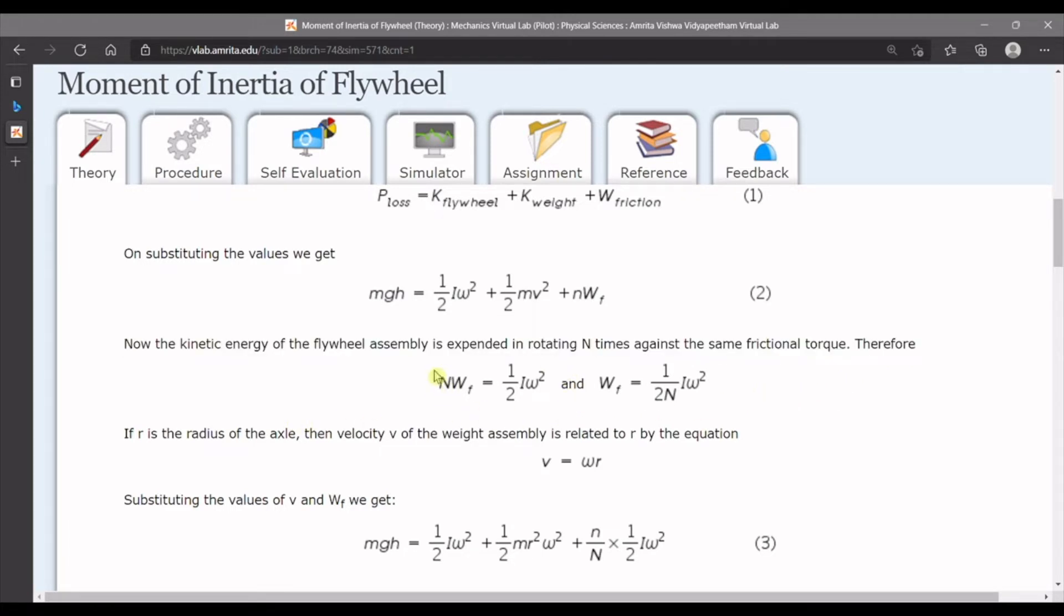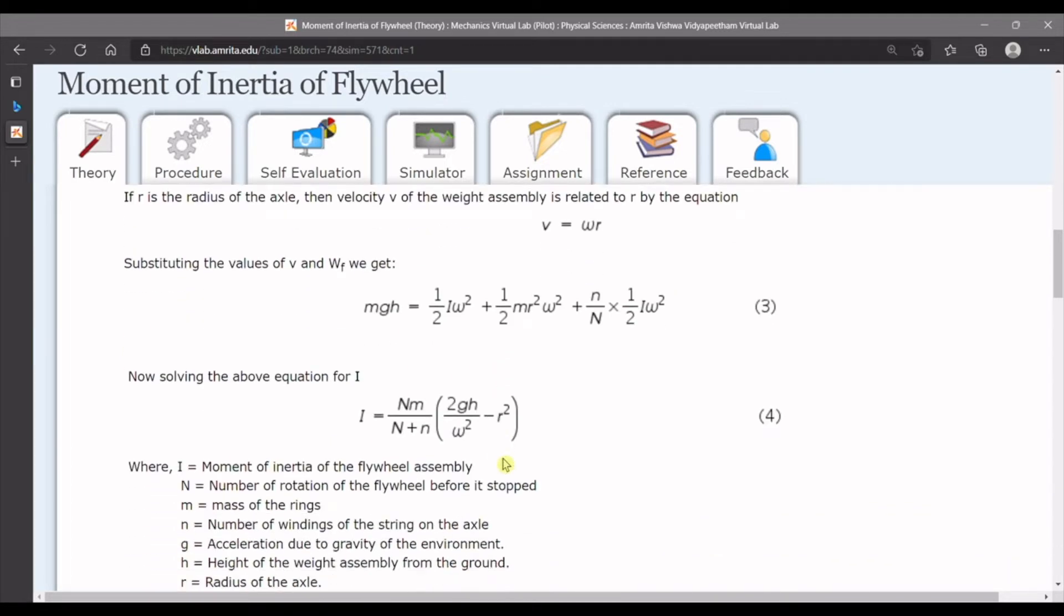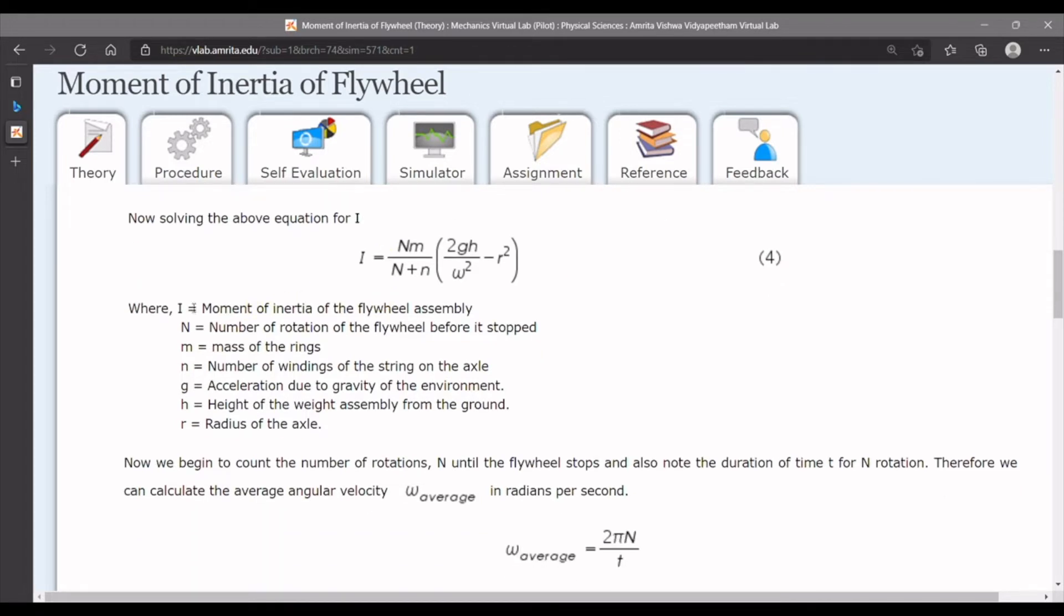Capital N multiplied by work done by friction equals half I omega square. We put these two formulas into our main equation to find the moment of inertia of flywheel. After solving this equation, we can separate out the moment of inertia of flywheel as shown on the screen. Now let's take an overview of this formula.